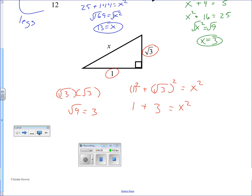So 1 plus 3 equals x squared. 4 equals x squared. Square root on both sides. The length of our hypotenuse, the missing side, is 2 units.